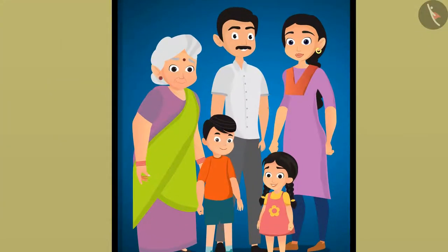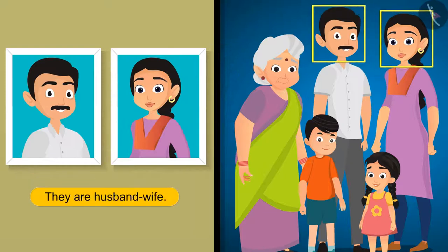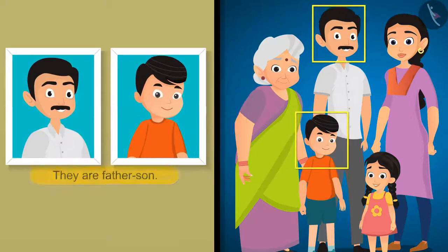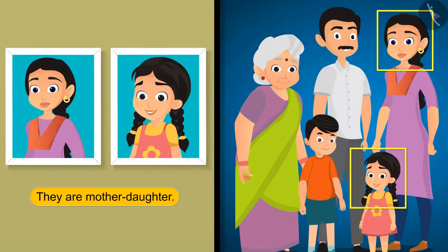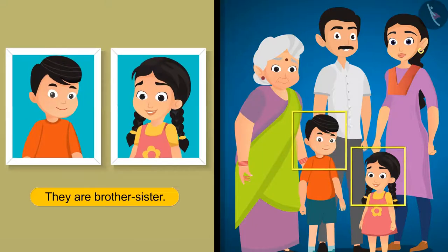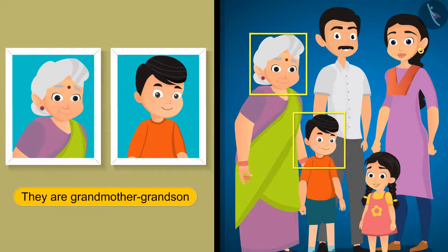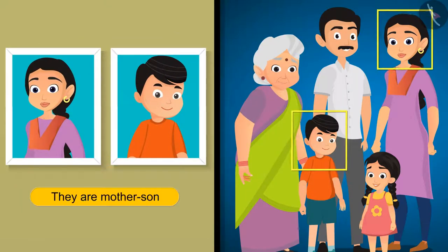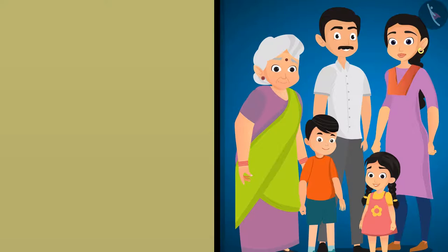Come, let's take a close look at Raju's family photo. Think about the relationship between different members of the family. They are husband and wife. They are father and son. They are mother and daughter. They are brother and sister. They are grandmother and grandson. They are mother and son. Similarly, think about how the different members of your family are related to each other.